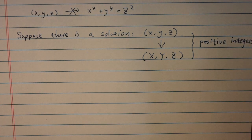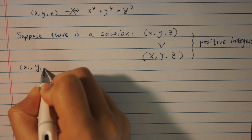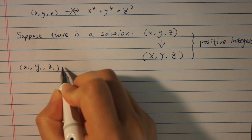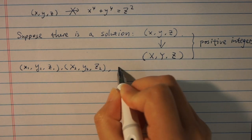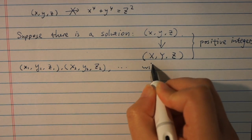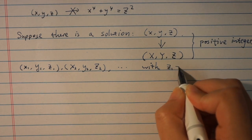Repeating this process, we would end up with the never ending list of solutions x, y, z, then x1, y1, z1, x2, y2, z2, x3, y3, z3, and so on with z greater than z1 greater than z2 greater than z3 and so on.